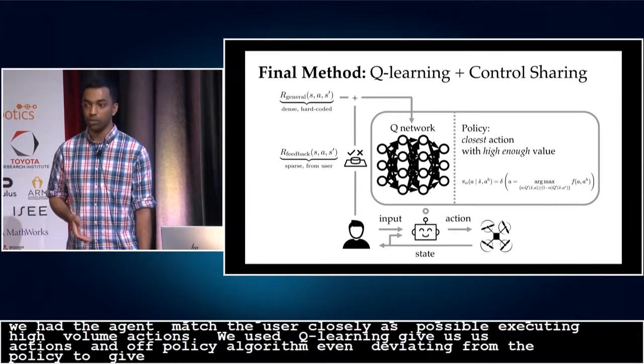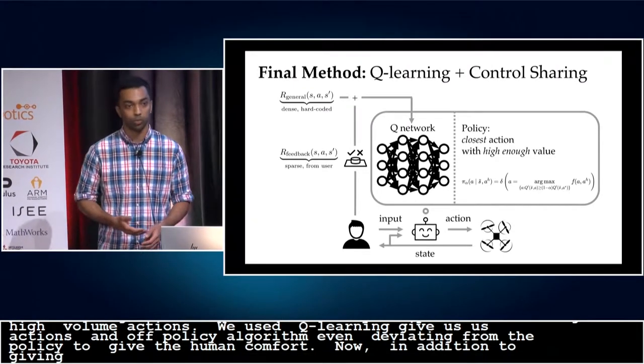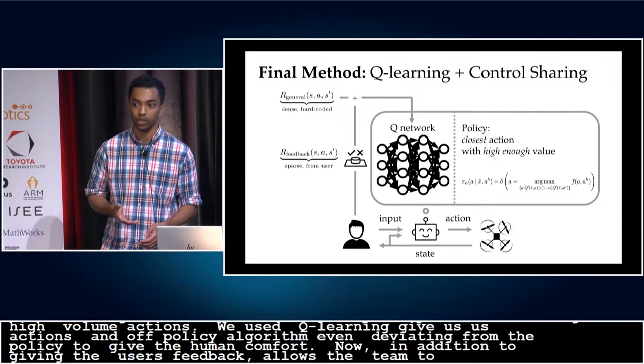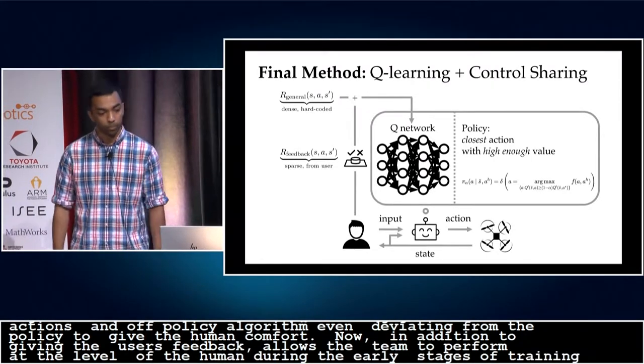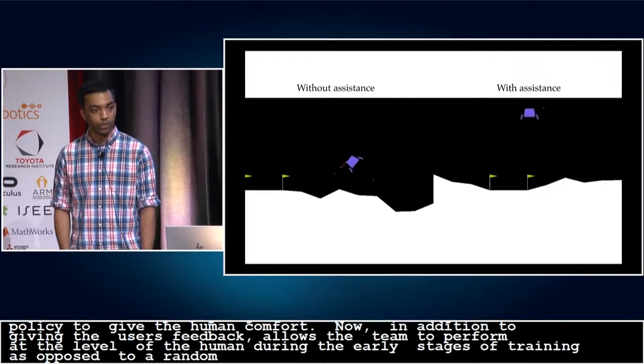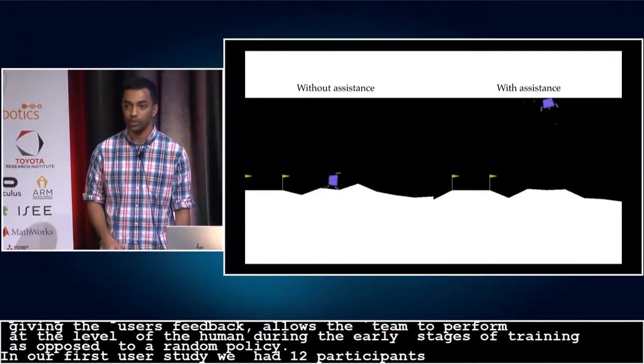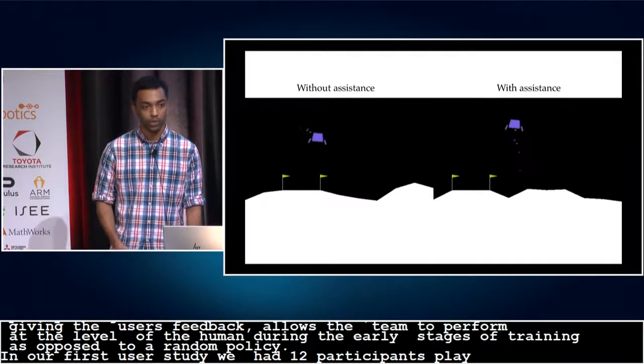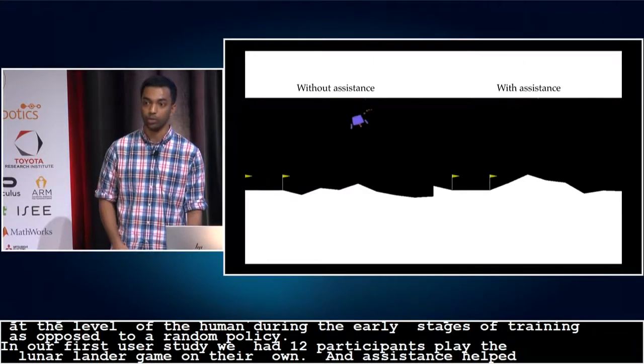So now, in addition to giving the users feedback on their input, this approach also allows the human-robot team to perform at the level of the human during the early stages of training, as opposed to initially performing like a random policy. In our first user study, we had 12 participants play the Lunar Lander game on their own and with the assistance of our method. We found that assistance helped users succeed significantly more often and crash less often than they would on their own.